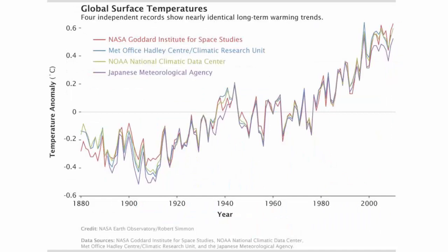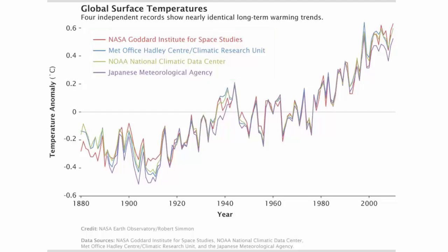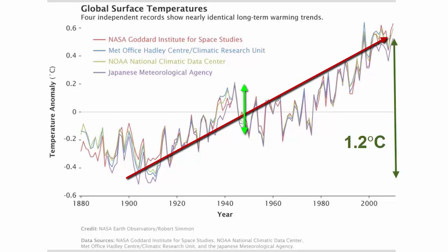This graph shows average global surface temperature data for the last century, as gathered and published by four different agencies. You can notice from the jagged nature of this graph that average temperature fluctuates greatly over a 5 to 10 year time frame, but you can also see the general upward trend when you look over 100 years. Since 1900, there has been a 1.2 degree Celsius increase in global temperature.